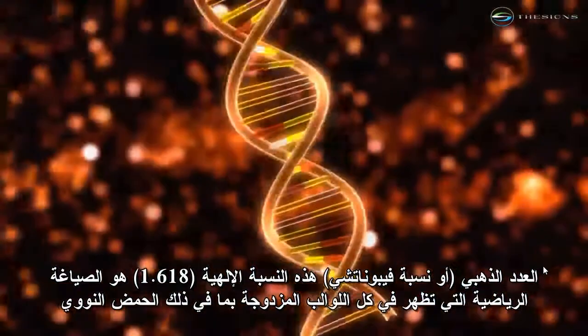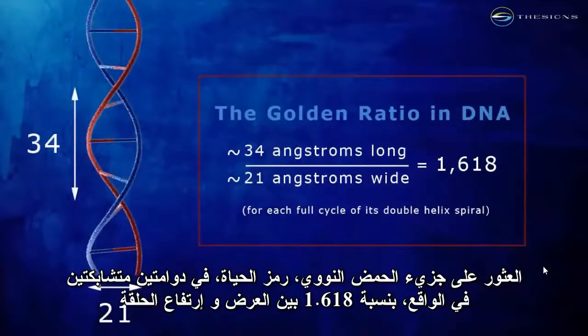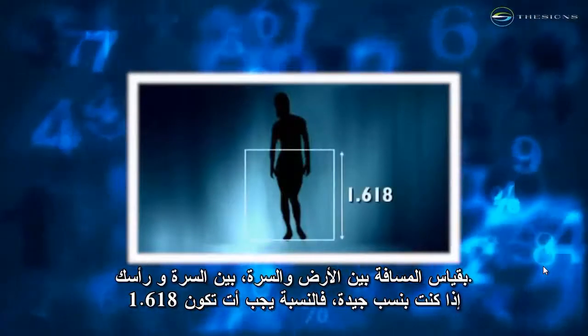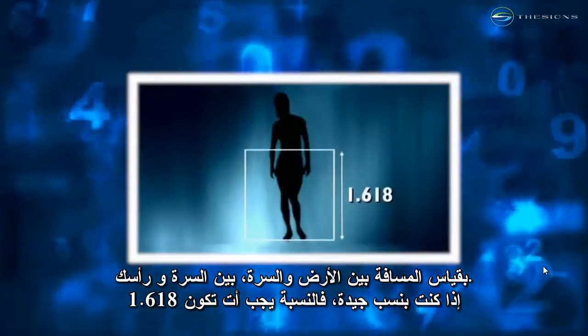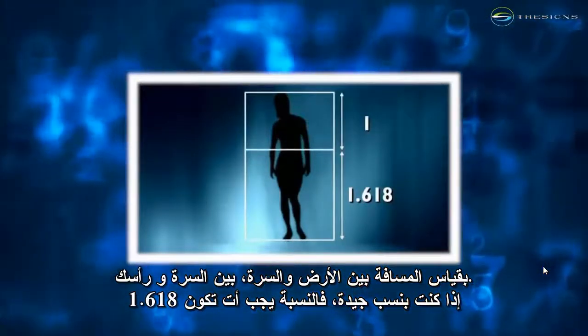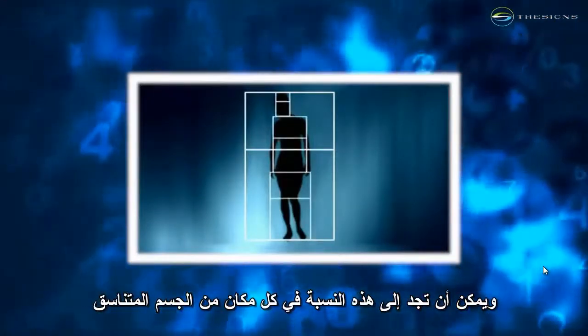Also known as the golden mean, the divine proportion is a mathematical formulation exhibited in everything from the double helix of DNA. The DNA molecule, the code for life, is made up of two intertwining spirals. We find the 0.618 ratio between the helix's width and cycle length, all the way to the form of the human body itself.